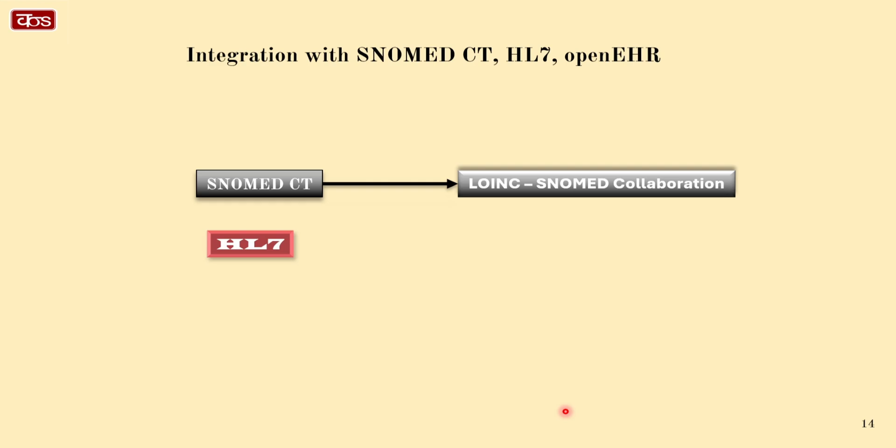HL7, HL7 FHIR, and openEHR archetypes extensively use terminology binding with LOINC codes. These integrations ensure that different systems can communicate effectively, providing a more complete picture of a patient's health. It is all about making healthcare smarter and more connected.